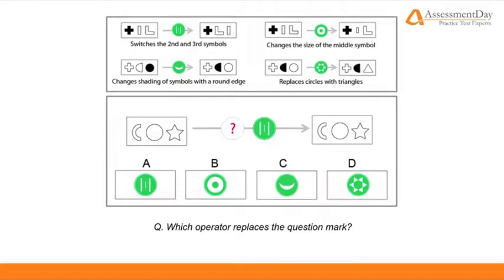Therefore, if we apply the crescent operator, we can see that the white C and the white circle, but not the star, will first change their shading. Then, the three-line operator acts, swapping the second and third shapes, the circle and the star.